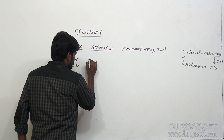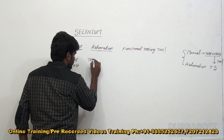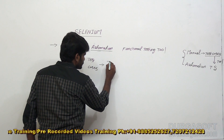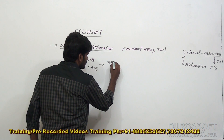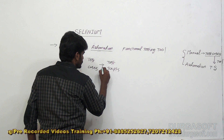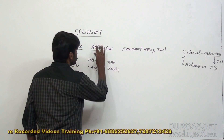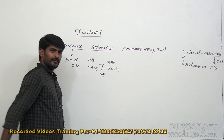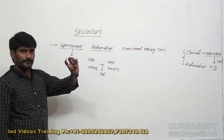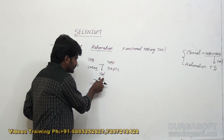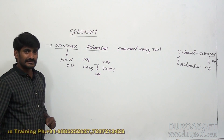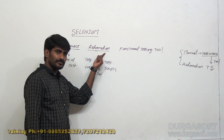Automation means the process of converting manual test cases into test scripts by using any tool — not only Selenium. Whatever the tool is, we are converting test cases into test scripts. That is called automation.